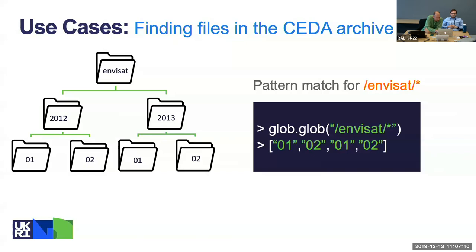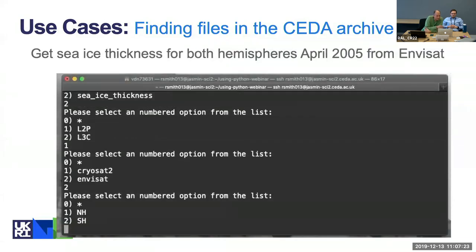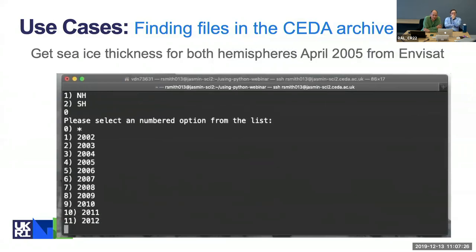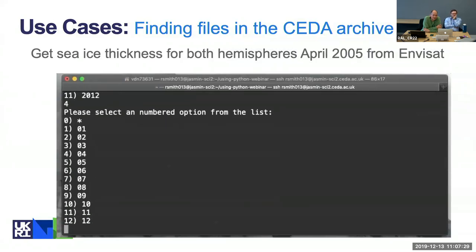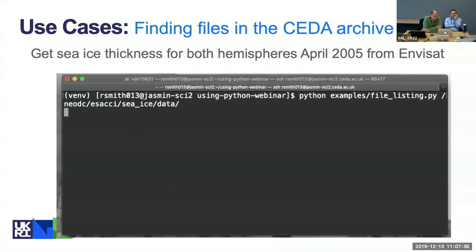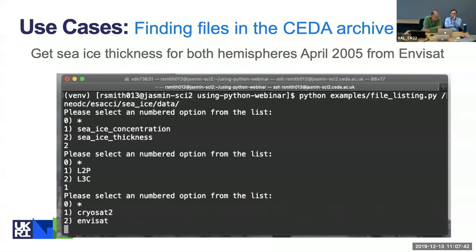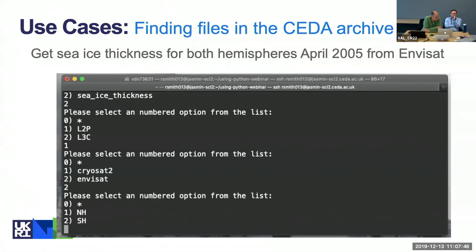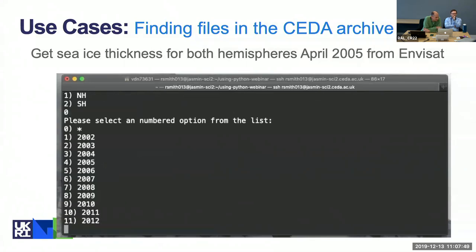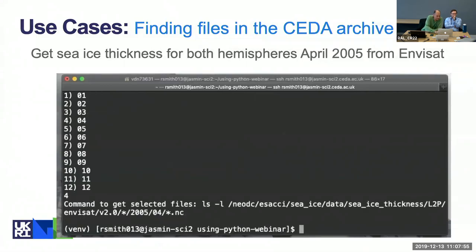If we wanted to run the script to get the sea ice thickness for both hemispheres for April 2005 from MVSAT, we can show an animation of running through the script. At each level it identifies the options and the user provides input to say exactly which components they're interested in. We call the script 'file_listing', send it an initial path, and it hunts through at each level — you can make a selection and it will tell you what's there. This is a useful script for traversing the file system without having to go through manually and look at it.